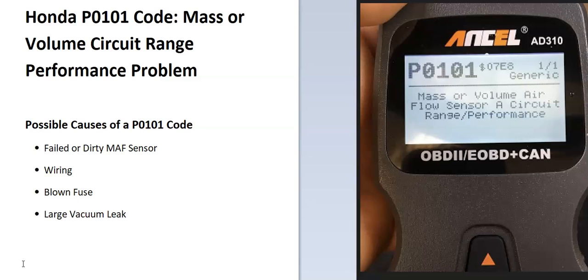The onboard computer needs to know how much air is going into the engine to get the right air-fuel ratio mixture going into each cylinder. And to do this, it uses what is called the MAF sensor, or the mass airflow sensor. And it's seen a problem inside of this, so it's going to have to be troubleshot to know why.